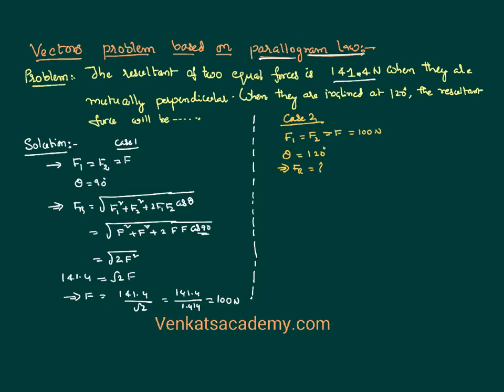We can again use the parallelogram law and write the same formula: F resultant equals the square root of F squared plus F squared plus 2·F squared·cos(θ). Let us write a generic formula first: square root of F squared plus F squared is 2F squared, and another 2F squared·cos(θ).